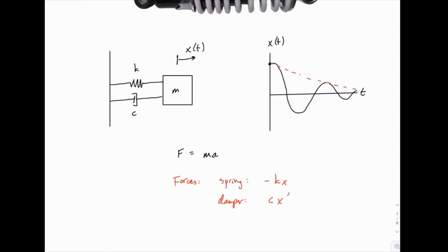That will also be negative because that force also opposes the motion. If the mass is moving to the left, the damper is fighting that motion. If the mass is moving to the right, the damper is still fighting that motion. So it's always opposing the direction of x prime.